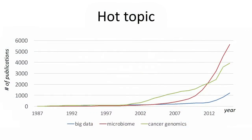This is a big data conference, and I don't need to tell you the microbiome is a hot topic — we can actually look at the data. This slide shows publications with given keywords in PubMed. In the green line you can see cancer genomics, in the blue line big data, and in the red line — hottest of them all — is the microbiome. Don't worry, big data is catching up; the first big data publication was in 1936.